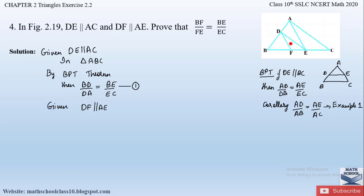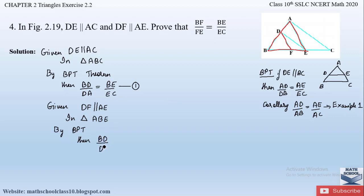Similarly, given DF is parallel to AE. Now they are saying that line DF is parallel to line AE. So we consider triangle ABE. In triangle ABE, by applying the Basic Proportionality Theorem, we get BD/DA is equal to BF/FE. Let this be equation number two.